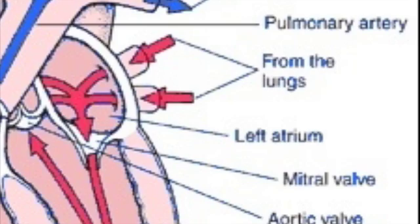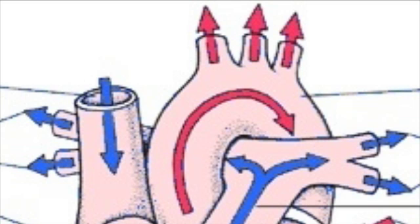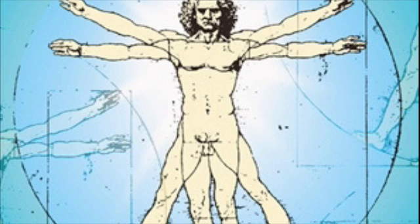From the pulmonary veins to the left atrium, blood travels through the mitral or bicuspid valve and into the left ventricle. It is then pumped up the aorta and out into the body.